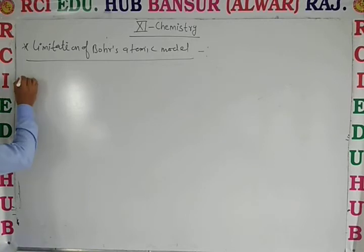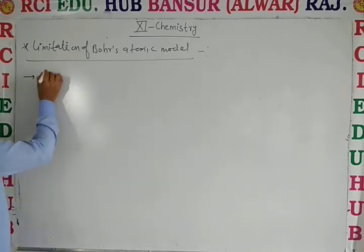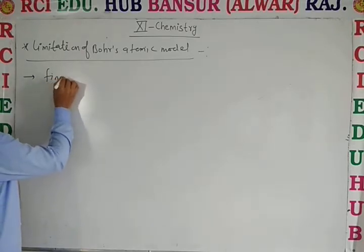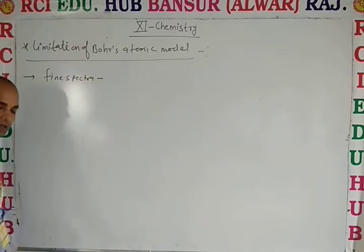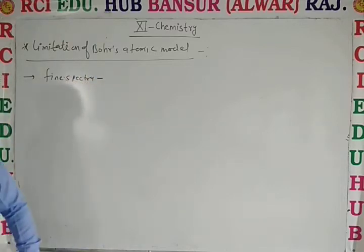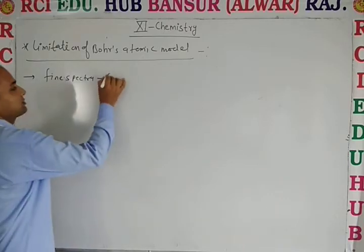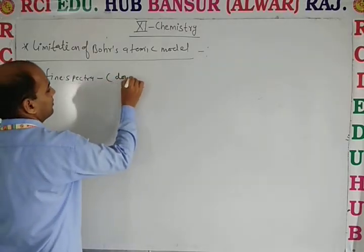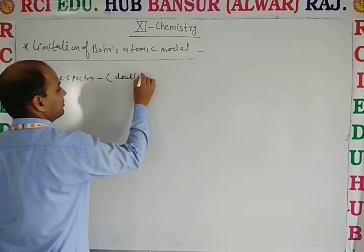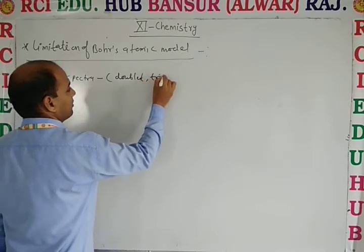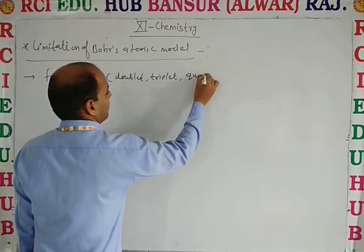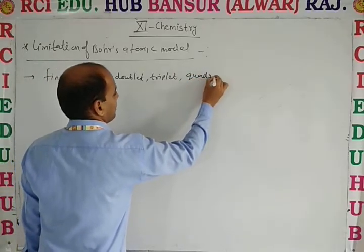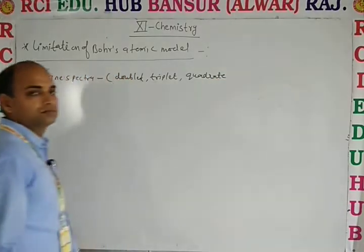So, dear students, first is, first limitation - Bohr model could not explain fine spectrum, could not explain about the fine spectrum. That means, doublet, triplet, quadruplet lines.